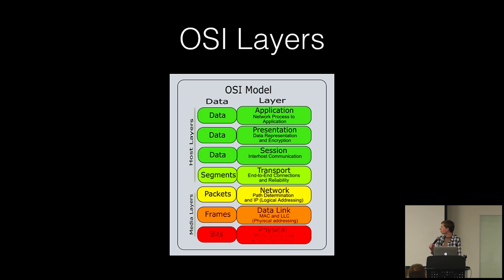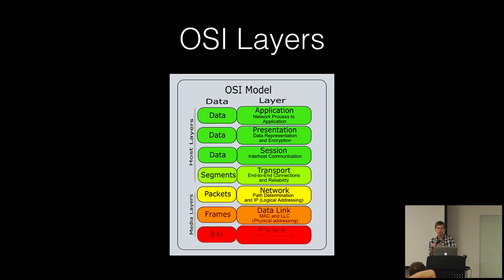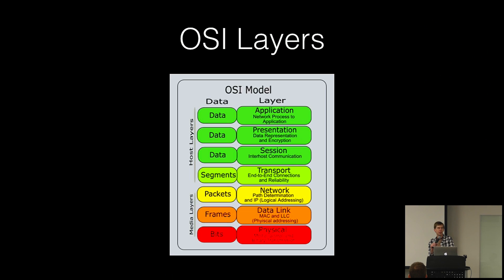We talked about layer one, the physical layer, and layer two, data link, which handles that lower level. Our next OSI tech talk will be combining all four remaining layers at once. Most of it will be about TCP and UDP at the transport layer, but we'll also cover the presentation and session layers and what developer types do at the application layer.